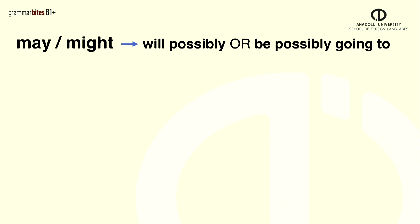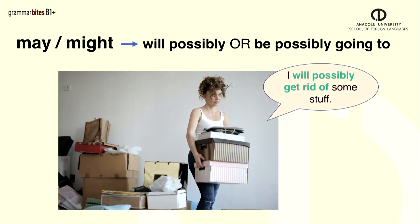Instead of using may or might, we can also use I will possibly or I'm possibly going to. As you see in the example sentence, you can say I will possibly get rid of some stuff, or I'm possibly going to get rid of some stuff.